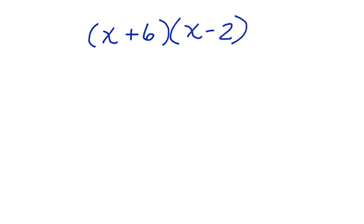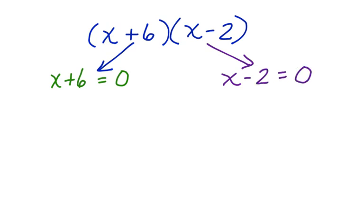And we're going to break these apart into two separate equations. We're going to make this x plus 6 equals 0. And we're going to make this x minus 2 equals 0. Now we're going to solve for x.